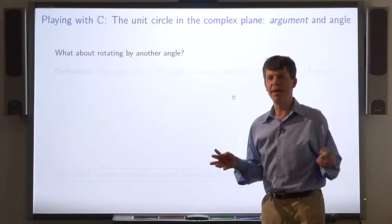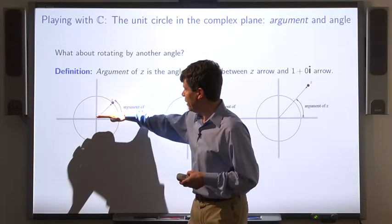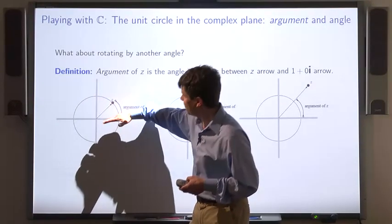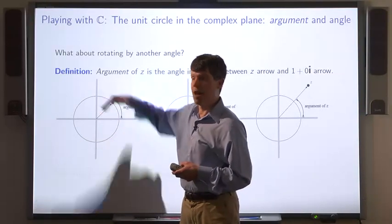What about rotating by another angle? Well, let's start with this definition. The argument of a complex number is the angle measured in radians between the x-axis and the arrow representing the complex number.